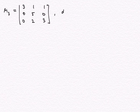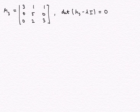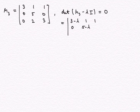So let's look at the eigenvalues, which are the roots of the characteristic polynomial — that is, the determinant of the matrix 3 minus lambda, 1, 1, 0, 5 minus lambda, 0, 0, 2, 3 minus lambda.